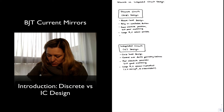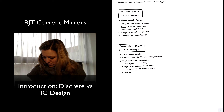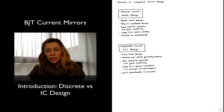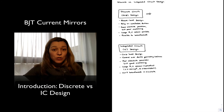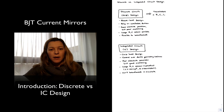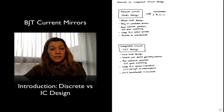In discrete circuits it is possible to breadboard your circuits, whereas in IC design you cannot breadboard. In discrete circuits — what we have focused on so far — we typically use circuits that include transistors and a combination of resistors, capacitors, and sometimes inductors. We do not necessarily rely on good component matching, but rather rely on precision of absolute values.